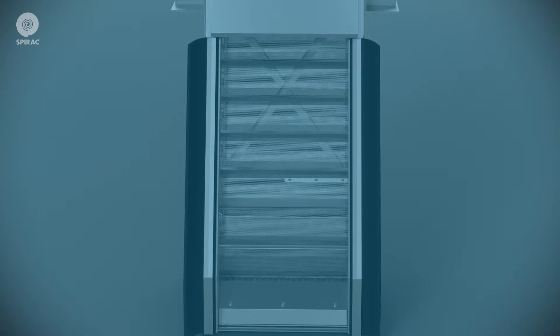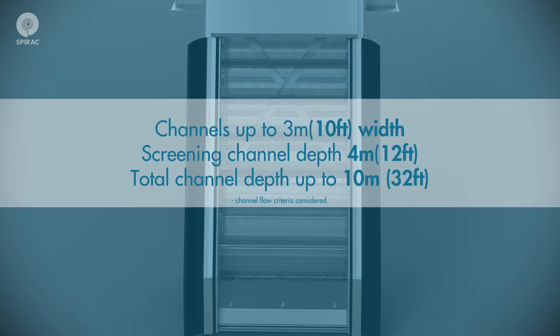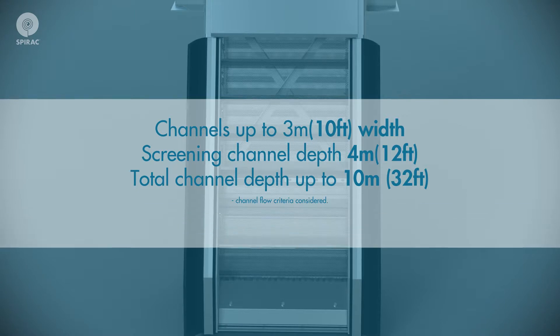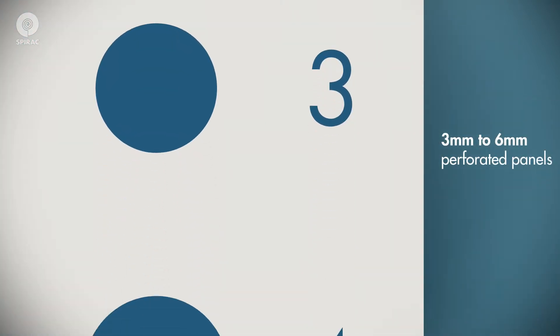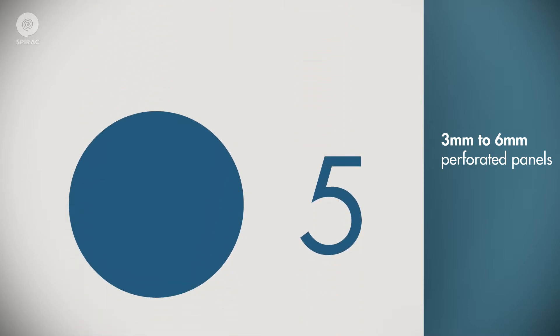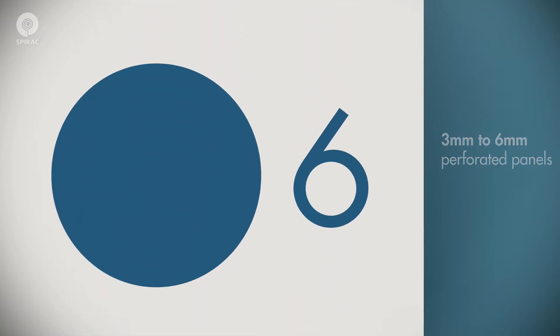The FineGuard screen can be designed to suit channels of up to 3 metres, 10 foot width and up to 4 metres, 12 foot in depth. The screen is available with 3mm to 6mm diameter perforated panels.